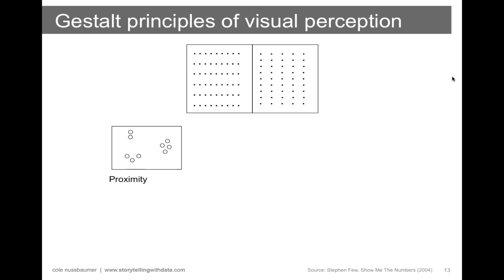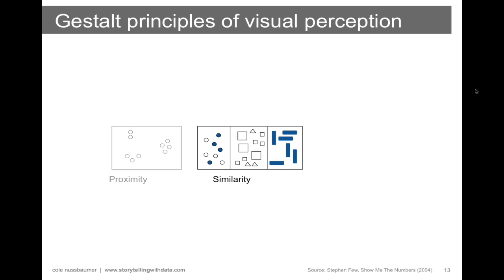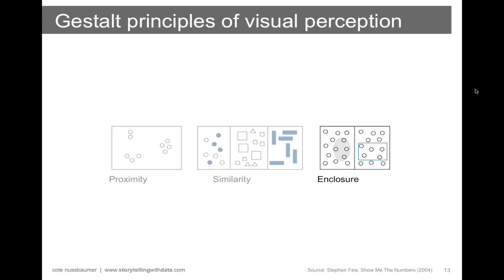The Gestalt principles of visual perception are still understood as how people interact with visual stimuli today. The first principle is proximity — we tend to think of things that are physically close to one another as belonging to a group. We can use this in tables: simply by differentiating the spacing between dots, your eye is drawn either across the row or down the column. The next principle is similarity — we tend to think of objects that are like color, like shape, or like orientation as belonging to a group.